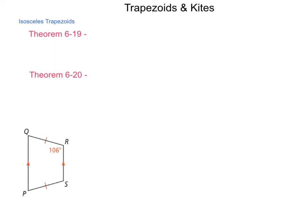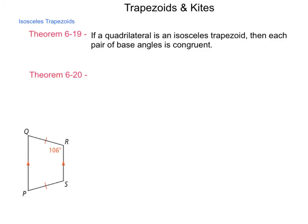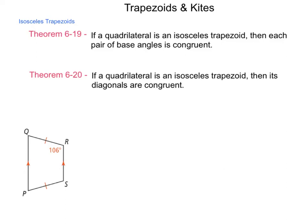Looking at isosceles trapezoids, Theorem 619 tells us if a quadrilateral is an isosceles trapezoid, then each pair of base angles is congruent. The two parallel sides are each called a base, so the angles involved there are congruent to one another. Theorem 620 tells us if a quadrilateral is an isosceles trapezoid, then its diagonals are congruent — sharing something in common with rectangles in that congruence of diagonals.